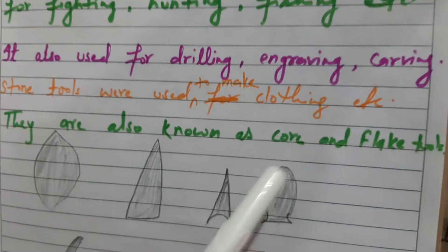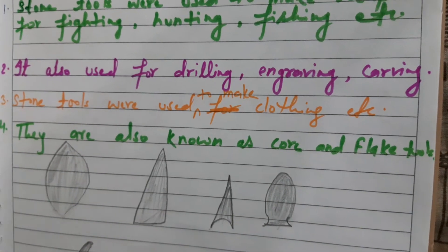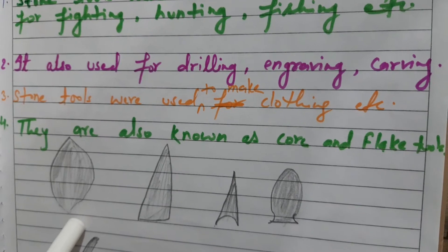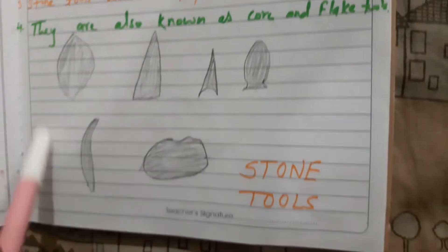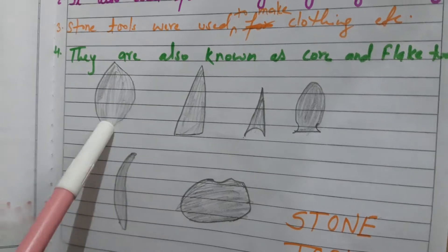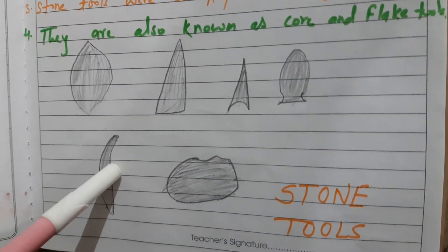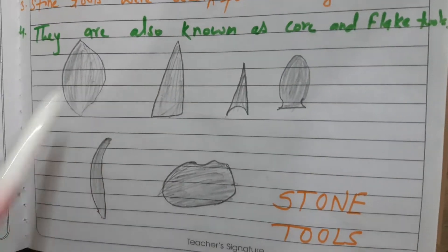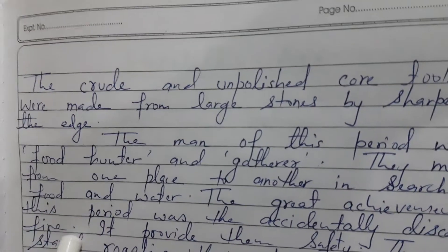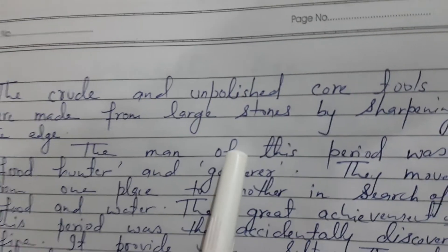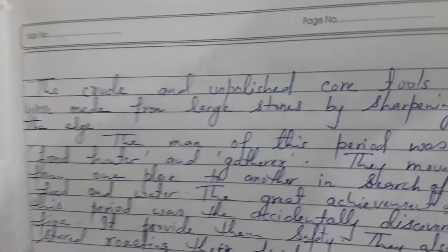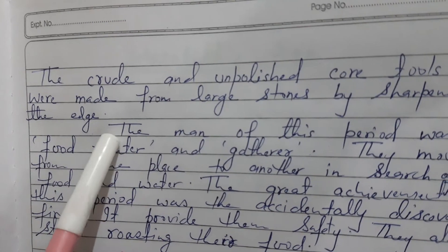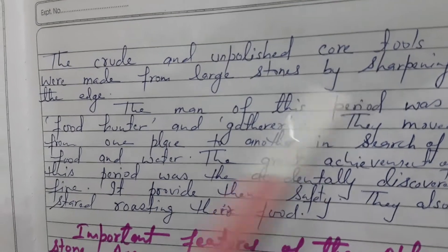These stone tools are also known as core and flake tools. The tools were crude and unpolished — they were blunt, not very sharp. Core tools were made from large stones by sharpening the edge.